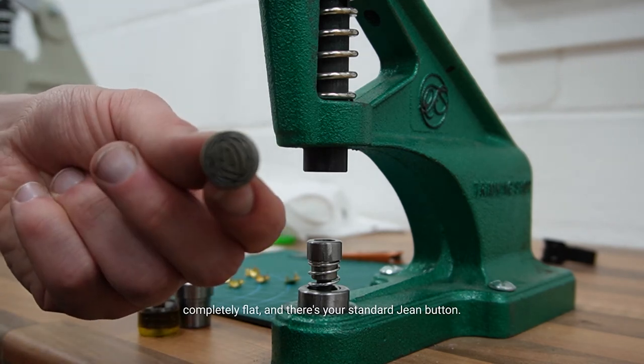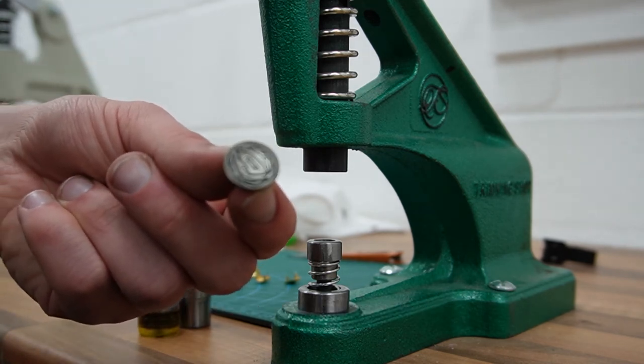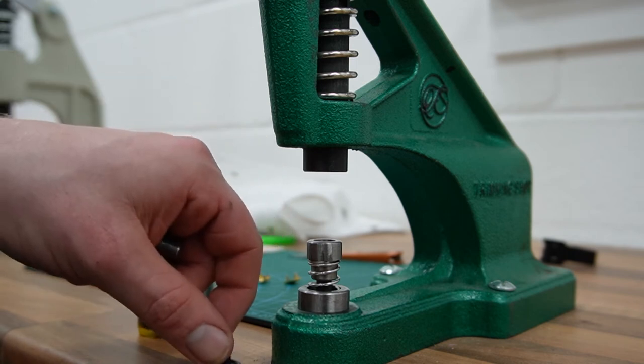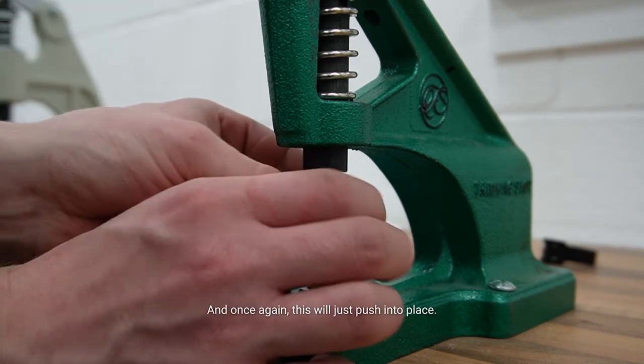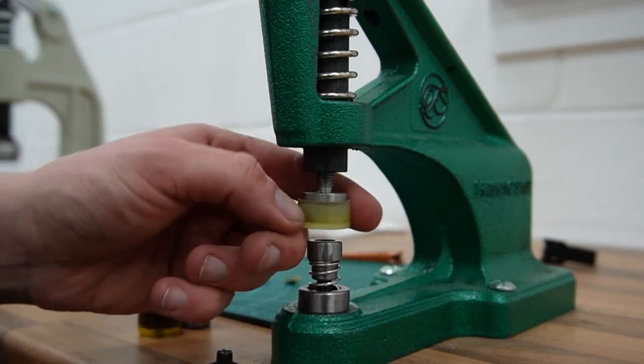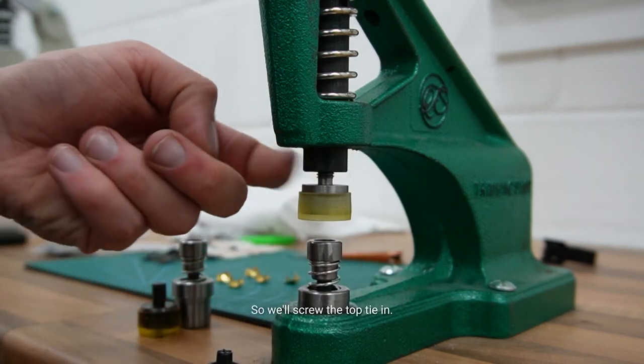And there's your standard jean button. Once again this will just push into place. So we'll screw the top die in.